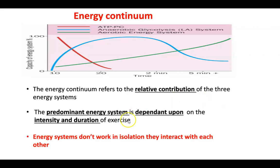These energy systems don't work in isolation — they do interact with each other. During intermittent sports such as rugby, football, netball, and hockey, the energy systems contribute differently throughout the game. It depends which one is predominant at what point, or what action or skill is being produced within that sport, to determine which energy system will be used.